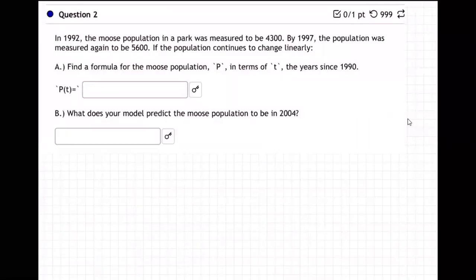Okay, so question number two. In 1992, the moose population in a park was measured to be 4,300. By 1997, the population was measured again to be 5,600. The population continues to change linearly, meaning going up in a line fashion, same amount every year.